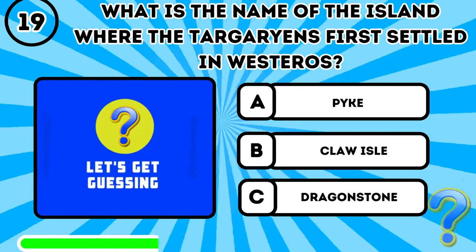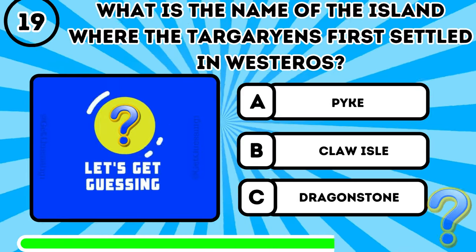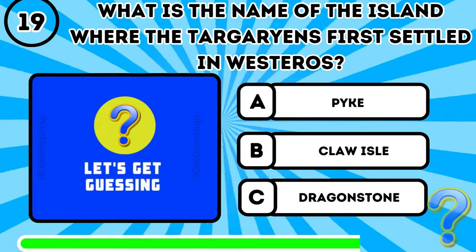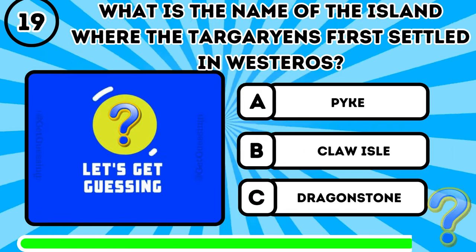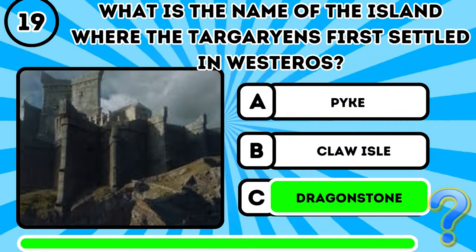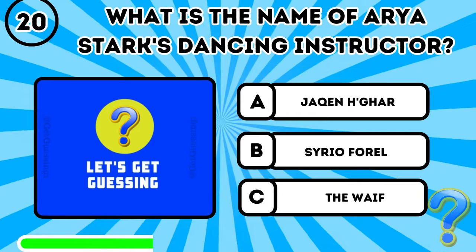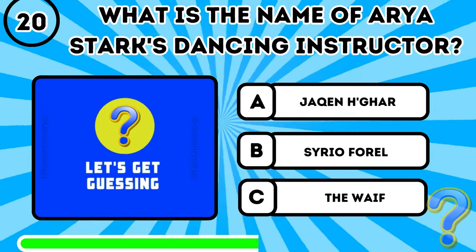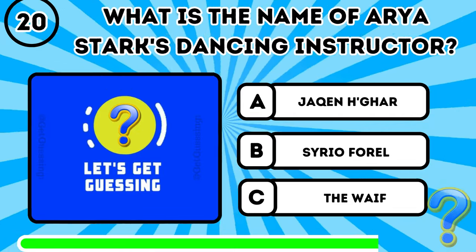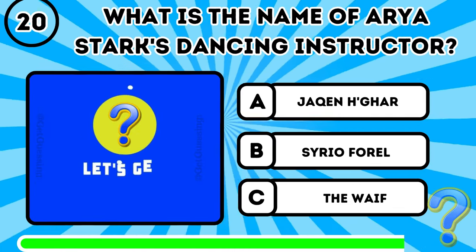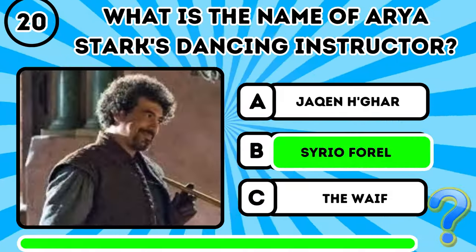Question 19: What is the name of the island where the Targaryens first settled in Westeros? It's C, Dragonstone. Question 20: What is the name of Arya Stark's dancing instructor? It's B, Syrio Forel.